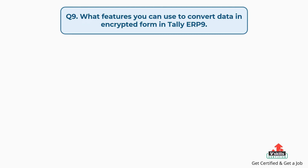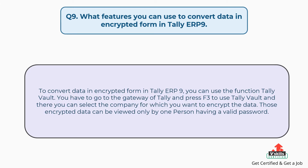Question number nine: what feature can you use to convert data in encrypted form in Tally ERP9? To convert data in encrypted form in Tally ERP9, you can use the function Tally Vault. Go to the gateway of Tally and press F3 to use Tally Vault, and there you can select the company for which you want to encrypt the data. Those encrypted data can be viewed only by one person having a valid password.